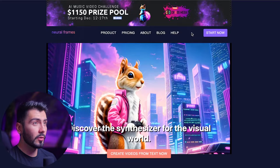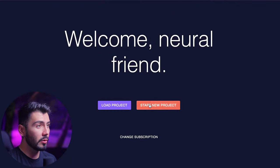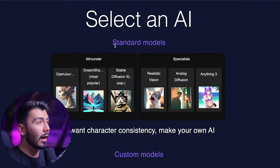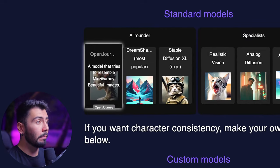Starting off, I want to show you guys just how easy it can be to get started adding amazing visuals to your music. Here we are at NeuroFrames.com — hitting Start Now, then choosing a new project, where we have our selection between two different categories of AI models. On the left we've got the all-rounders, which are very good for pretty much everything. Open Journey will resemble Mid Journey, which we actually have a video on Mid Journey on this channel.